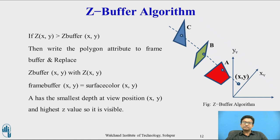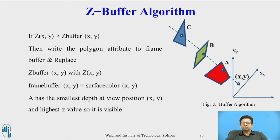So z(x, y) is the new depth which replaces z_buffer(x, y). We also update the frame buffer value — whatever color and intensity that object has, that color and intensity will be added to the frame buffer. That is, frame_buffer(x, y) = surface_buffer(x, y). The new color and intensity will be added to the frame buffer.